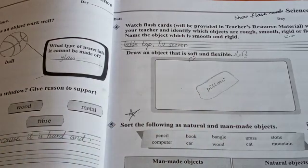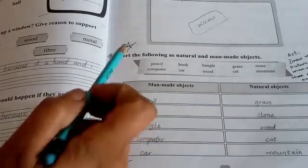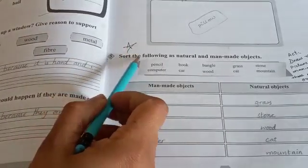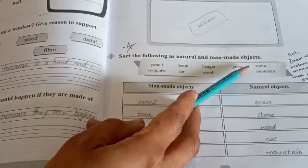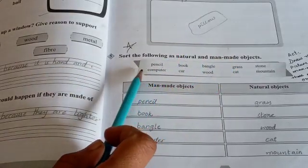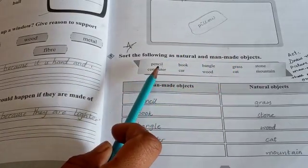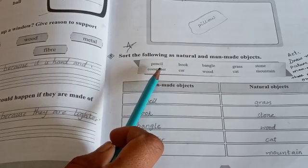Question number 5: Sort the following as natural and man-made objects. You have natural things or man-made things.